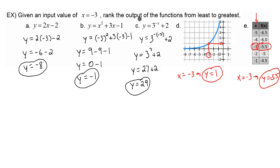Back to our directions, it says rank the output of the functions from least to greatest. So our smallest output, it looks like, is going to be part A. That was negative 8. Our next smallest is E, that was negative 5.5. Then our next smallest, I believe, was this one, part B, that was negative 1. And then we would go to D, that was y equals 1. And then our highest output is going to be part C, and that was 29.